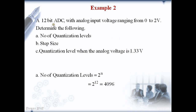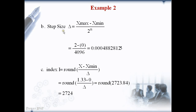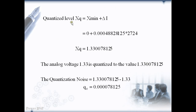The next example is the same as the previous one except the input analog voltage range. The analog input voltage varies from 0 to 2, so it is called unipolar quantization. The number of quantization levels is the same as the previous example because it depends on the bit depth n, which has the same value of 12. The step size is calculated by substituting x minimum equals 0, so the step size is reduced to half the value of the previous example. The index i is calculated for the same analog input voltage of 1.33 volts, and the quantized level and quantization error are also calculated.